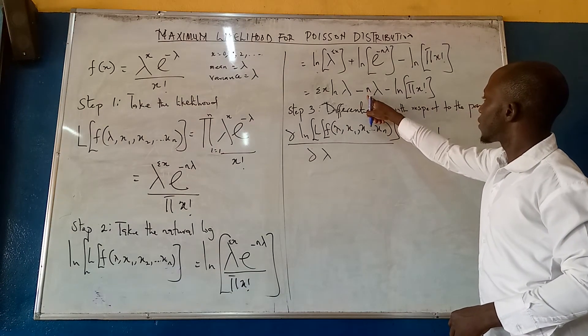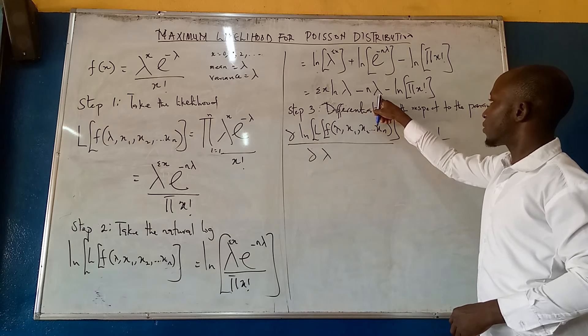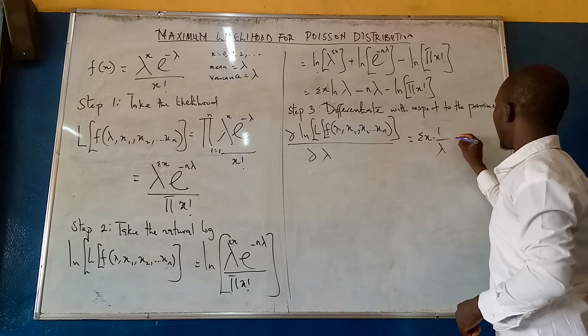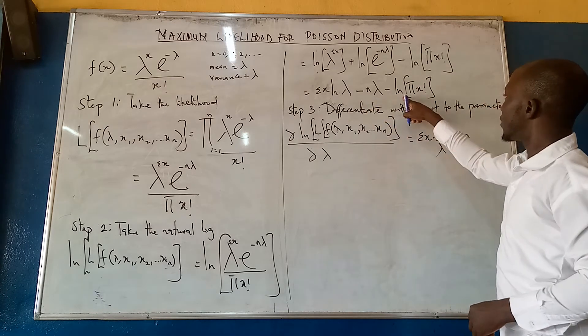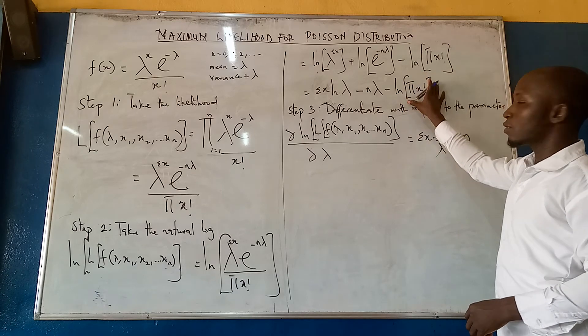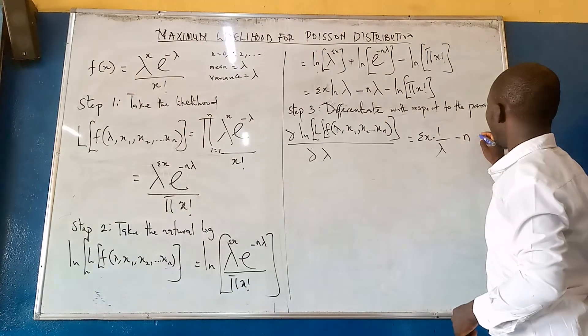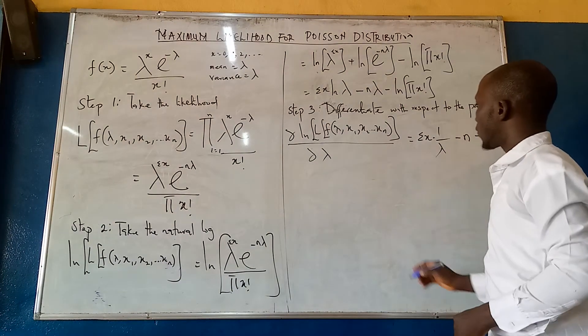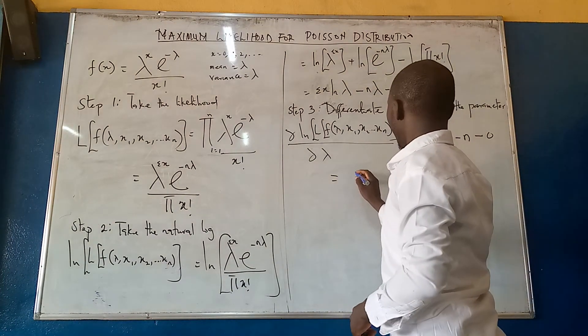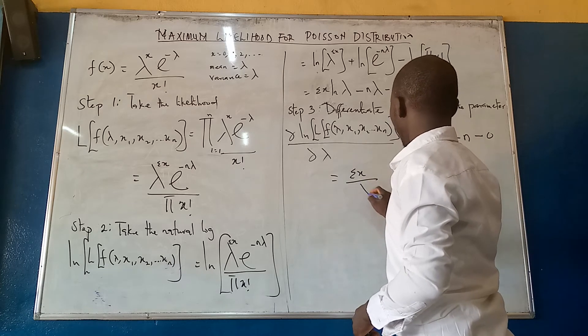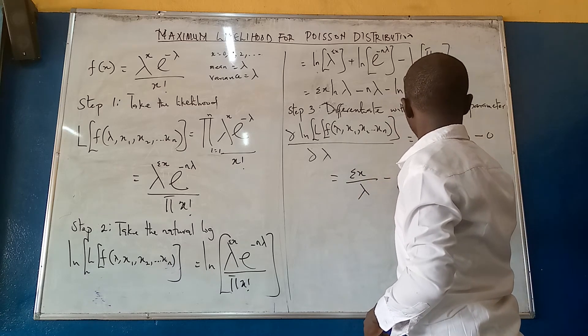Then, differentiate minus n lambda with respect to lambda, we are going to have just minus n. Then here, we have nothing to do, because there is no parameter here. So this will give us minus 0. So in this case, we are having summation x over lambda, minus n.